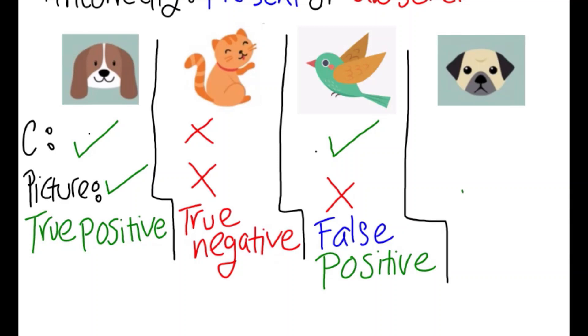In our fourth picture, we show a dog, but the child states that this is not a dog. This is a false negative, negative because the child had stated that there was not a dog, but false because there was.